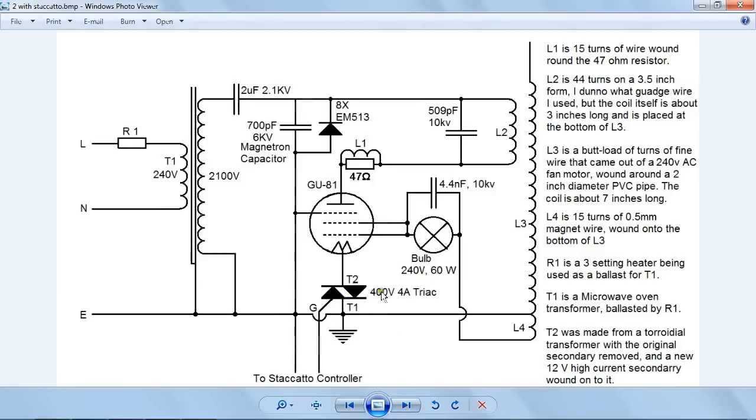Now, the only thing I don't get is you can use a 400 volt 4 amp triac and it will work. The only thing I don't understand is how a triac rated for 400 volts is going to take a supply of around 5,000 volts. But apparently it can, and this is how you do it, so that's what you do.